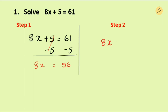So always start with addition or subtraction. The equation now becomes 8x equals 56. It's a multiplication equation, so we do the inverse, which is division. We divide 8x by 8 and 56 by 8 — dividing by the same number on both sides — giving us X equals 56 divided by 8, which is 7.